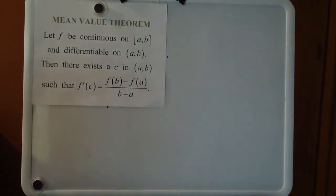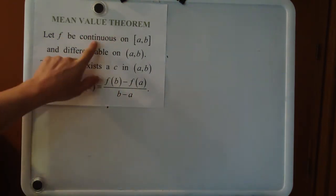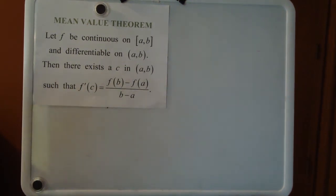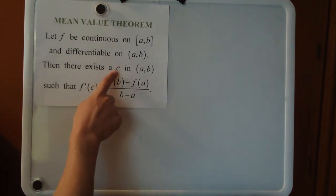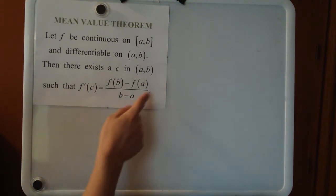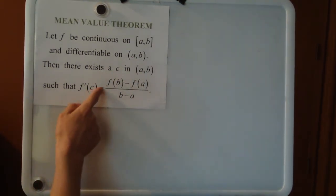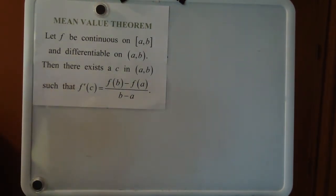We'll give this theorem a quick reading. It starts out the same way — the function is continuous and smooth — but notice that the assumption of equality at the endpoints is not there. It goes right into the conclusion: there must be a value c somewhere on the interval where f prime of c equals the quantity f of b minus f of a over b minus a. You'll recognize the right-hand side from earlier lessons as the slope of the secant line.